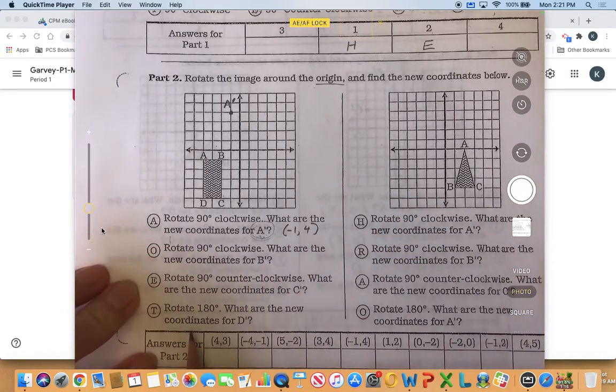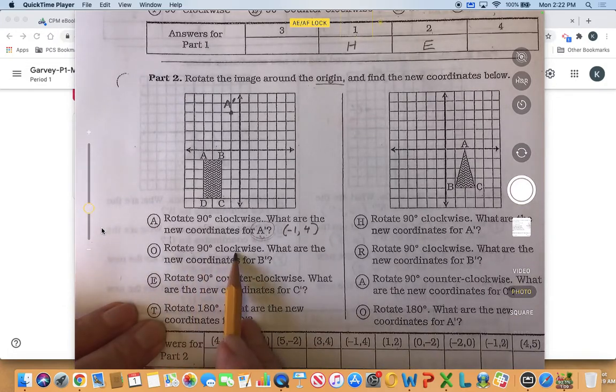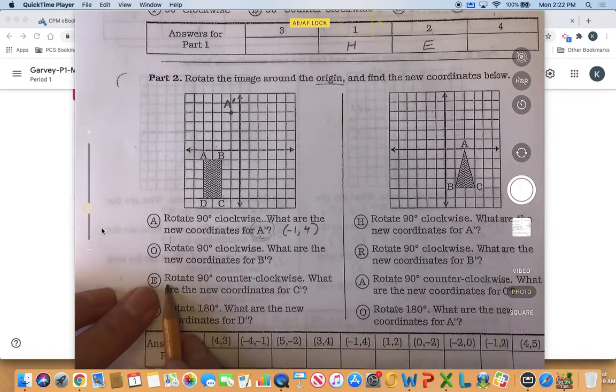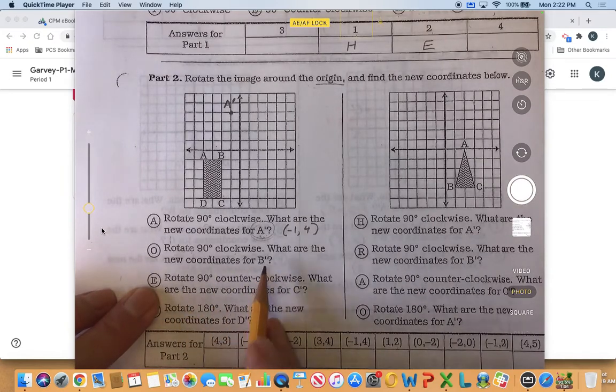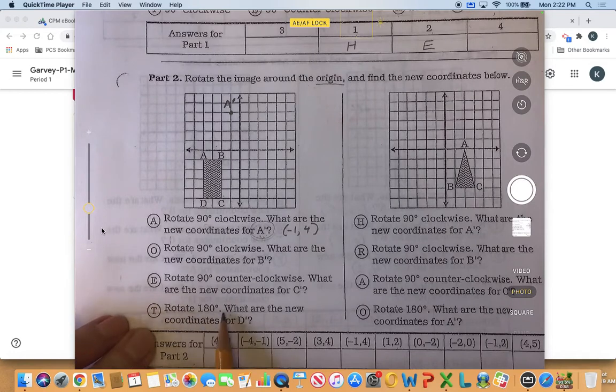All right, so let's see. Here's another 90 degree clockwise—that's for b. Here's a 90 degree counterclockwise—that's for c. And let's do a 180 rotation.